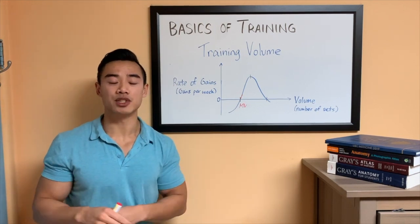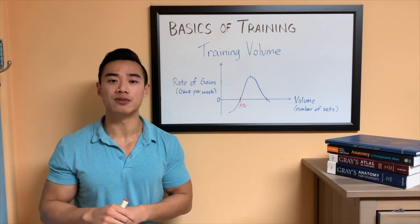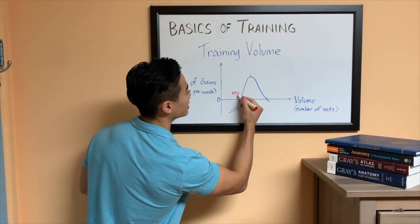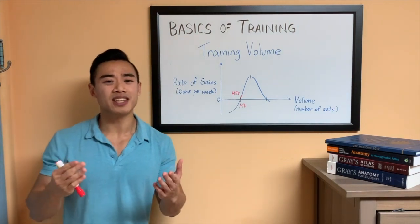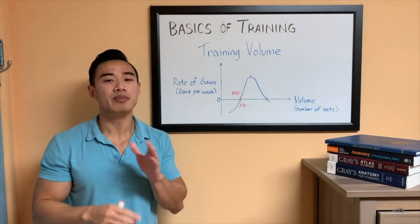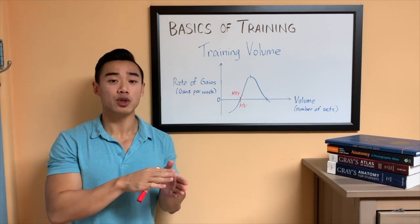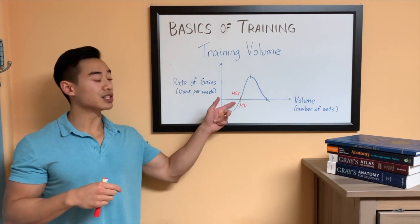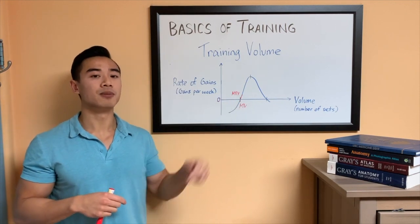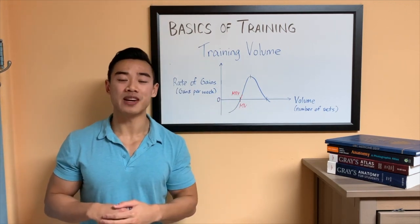The next concept that I'll introduce is called minimum effective volume, which is described on this graph by this initial red part. Basically, the minimum effective volume is the minimum amount of volume that you can do and still grow. Essentially, what that means is on this graph, as soon as you break into the positives, you're at your minimum effective volume.